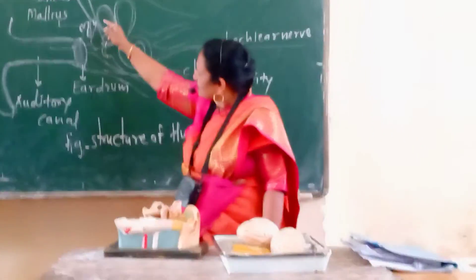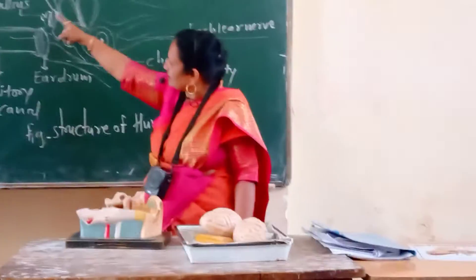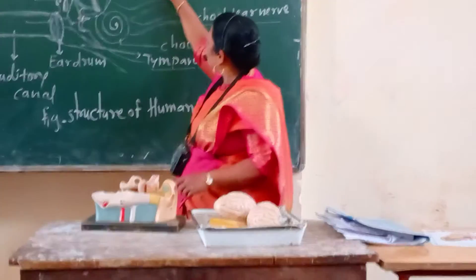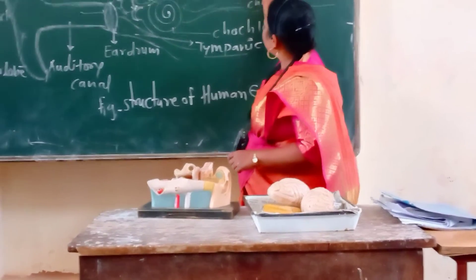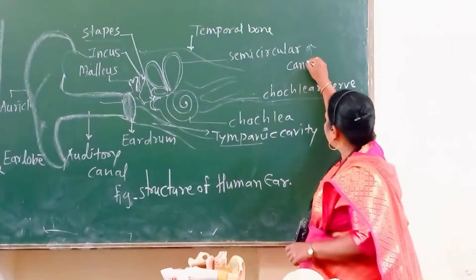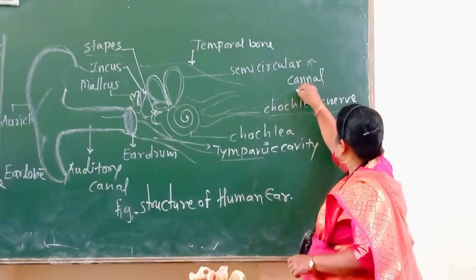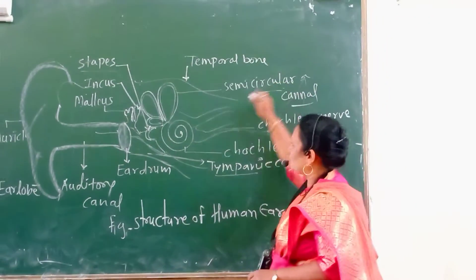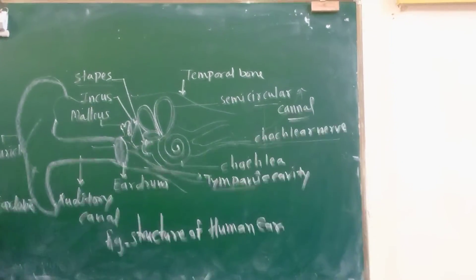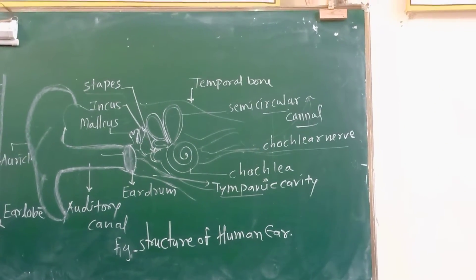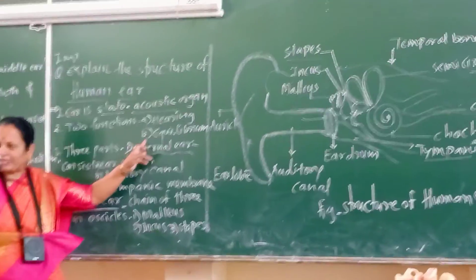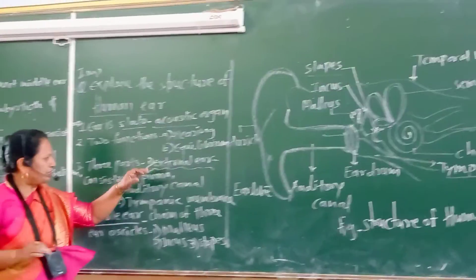Middle ear consists of stapes, incus, and malleus, along with semicircular canals. The semicircular canals play an important role in the conversion of sound waves into impulses. The ear is the center of the acoustic organ with two functions: hearing and equilibrium, that is, balance of the body.